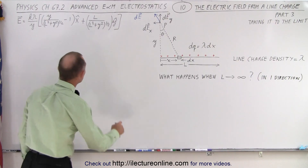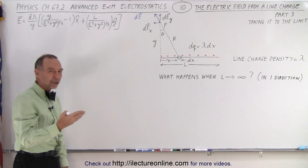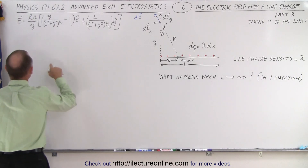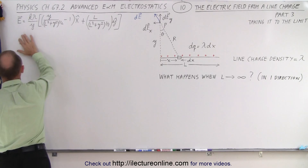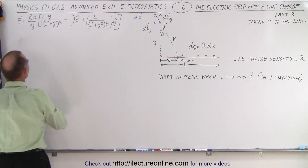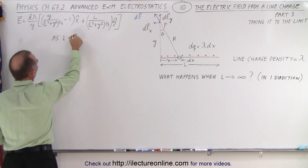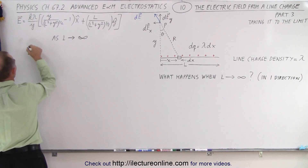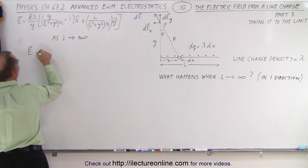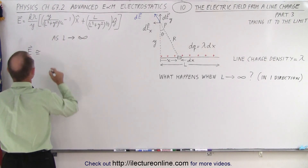So we go back to the equation over here. What we're going to do now is let L go to infinity. So if L goes to infinity, what do we get? We get E as — let me first write that down, because that's important to make note of. So as L goes to infinity, the electric field will now become approximately, as we are on the path of making it infinity.